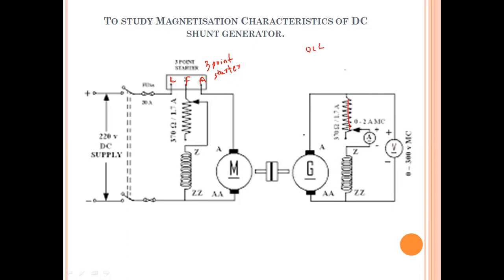We use a DC motor because in a power plant, a turbine gives rotation to the generator. In our lab there is no turbine, so instead of a turbine, we use a motor to give mechanical input to the generator. The motor has electrical input and mechanical output, and that mechanical output is given as the input to the generator.